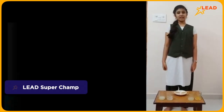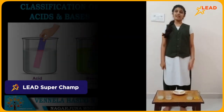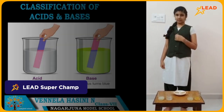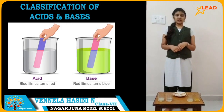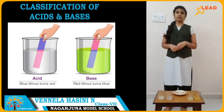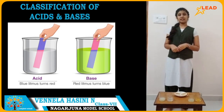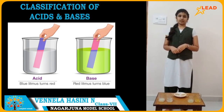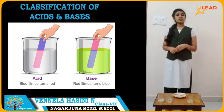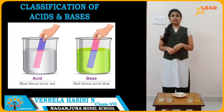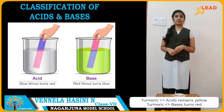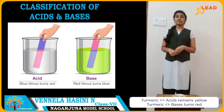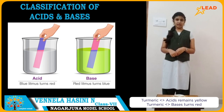Welcome to the online learning class. Myself Mandela Assani. Today we are going to discuss about classifications of acids and bases using the indicator turmeric. Before starting the activity, you need to learn that turmeric when reacted with acids remains yellow, and when reacting with base turns red.